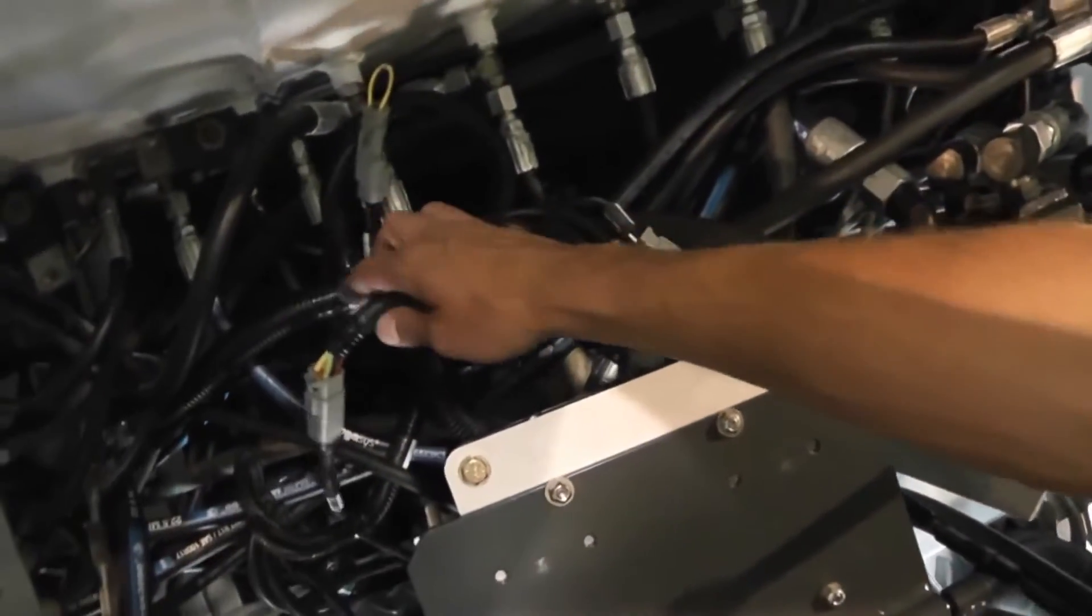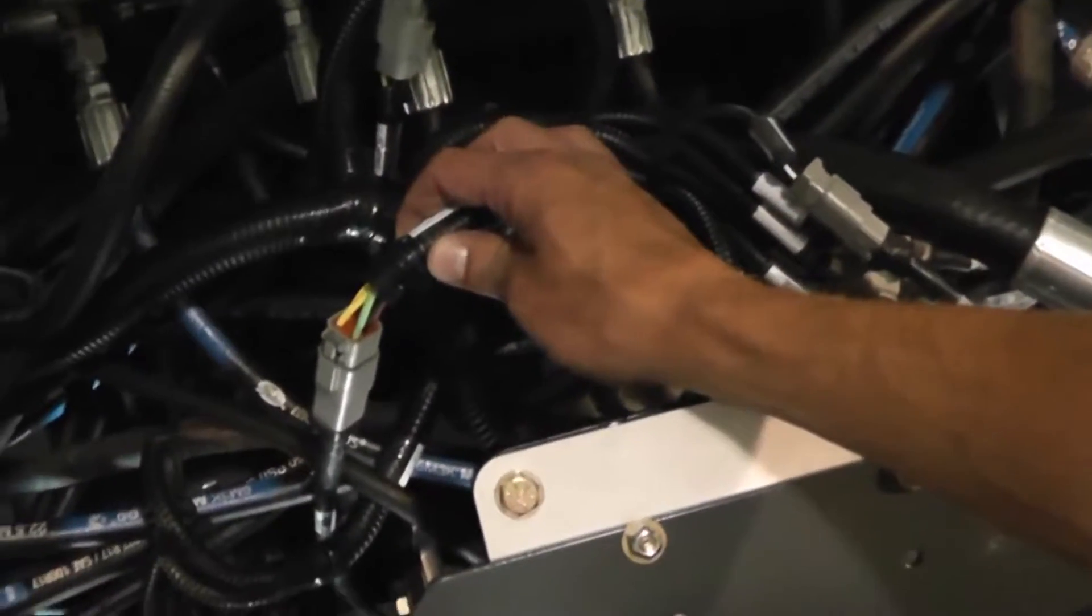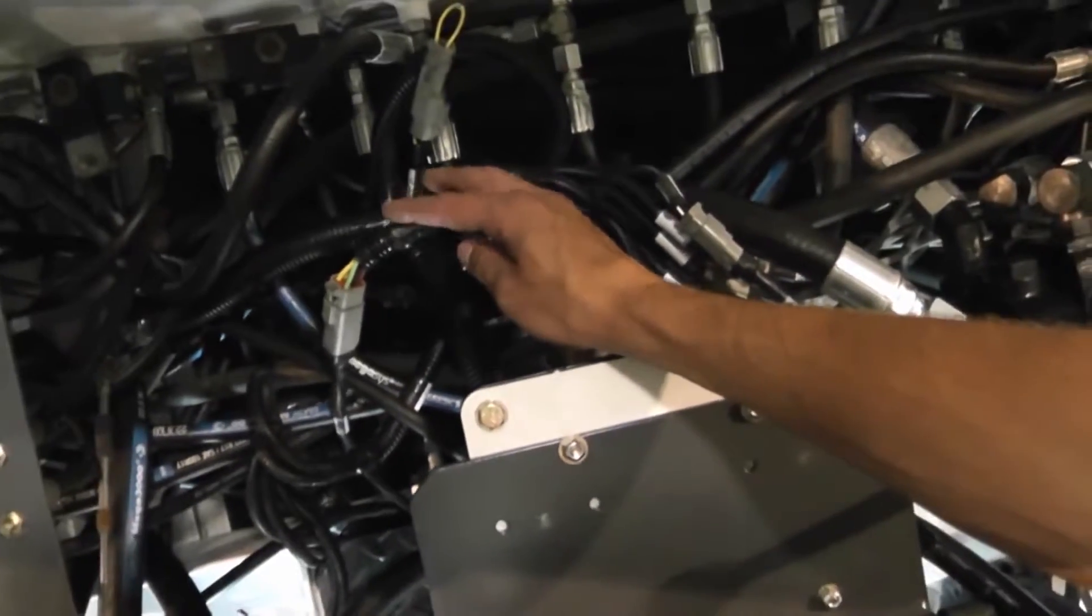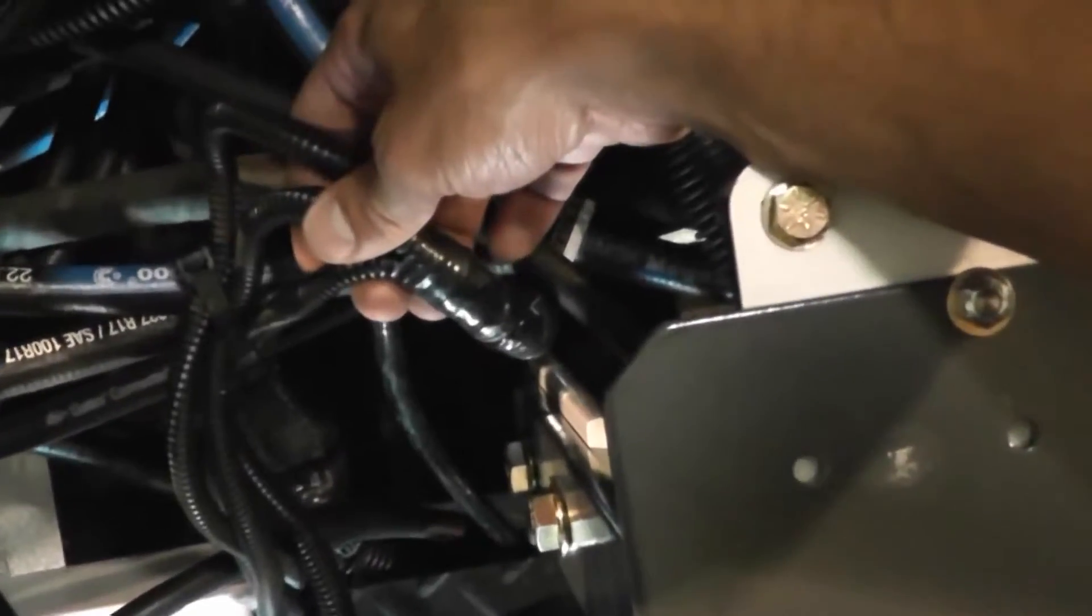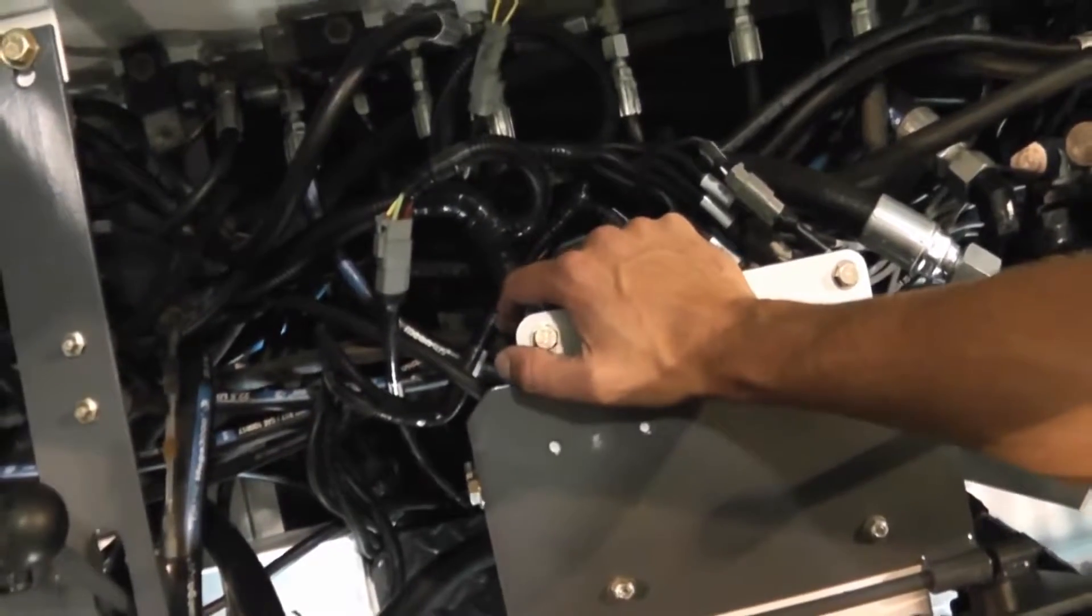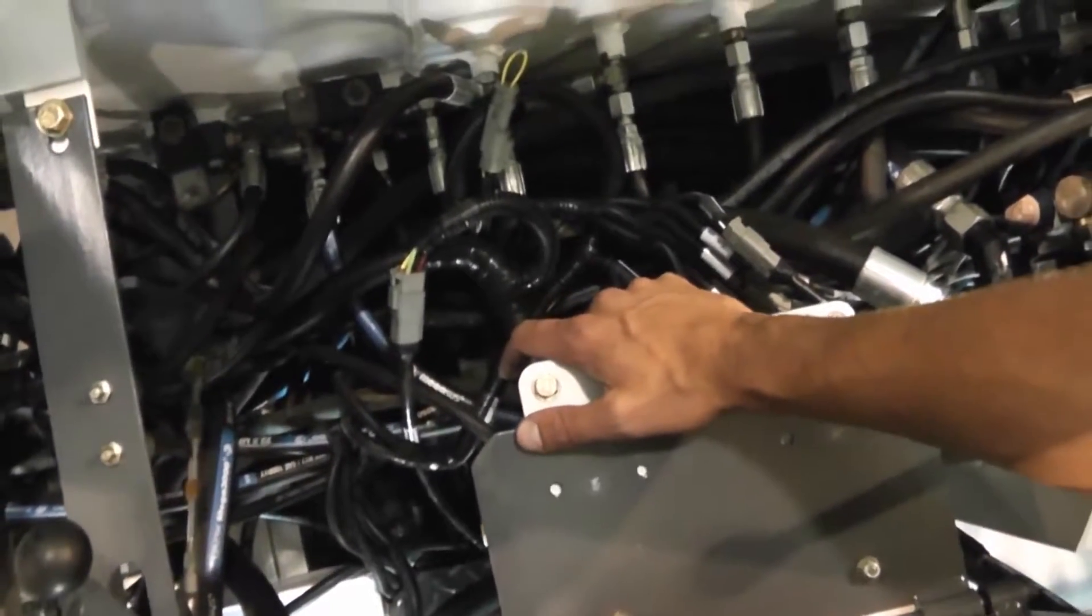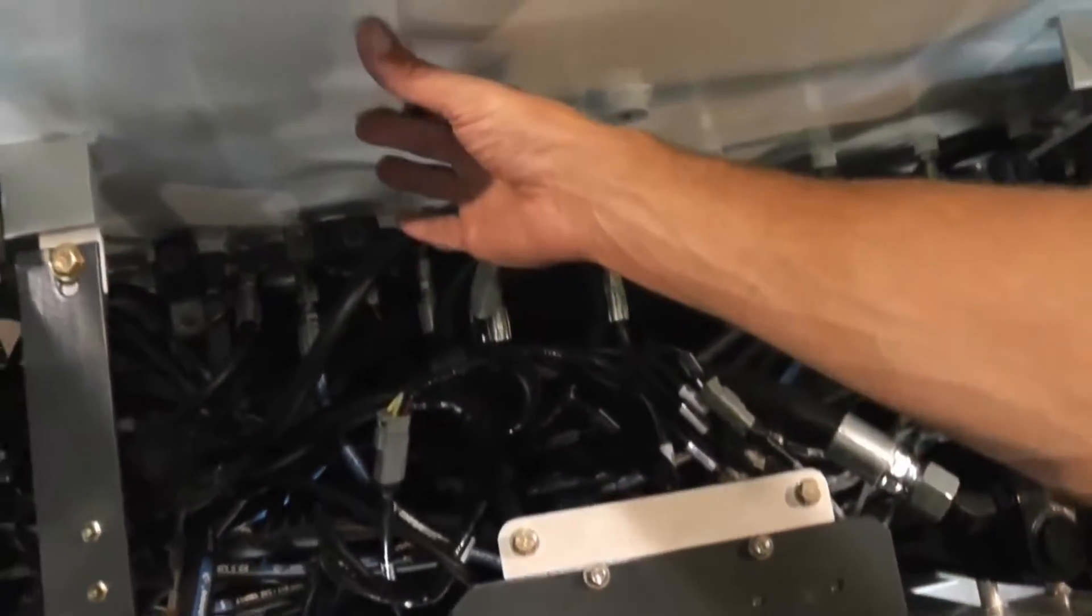Back over here are the rest of your connections. This connection here is for your display. Provides power and communication to it. These connections provide power to the harness. They come from the fuse panel. The fuse panel can either be mounted underneath the control console in the steering wheel, or back on this plate.